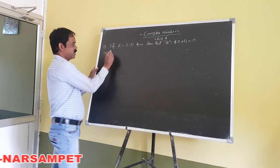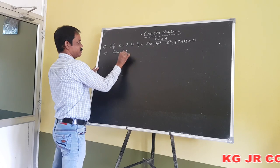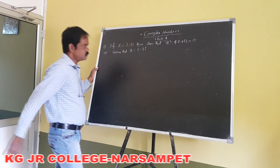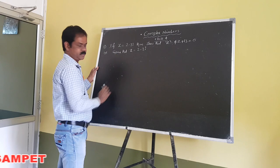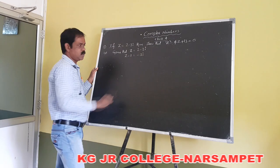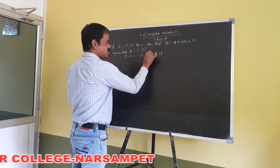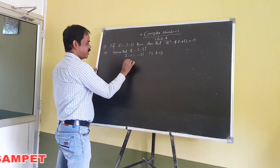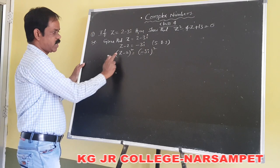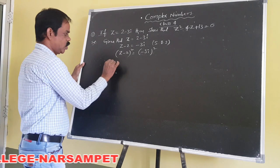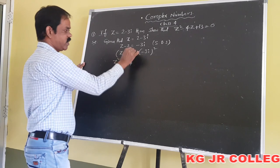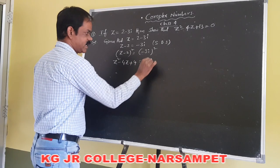First of all, the given complex number is z equals 2 minus 3i. We rearrange this so that z minus 2 equals minus 3i. Now squaring on both sides, we get z minus 2 whole square equals minus 3i whole square. Expanding using the a minus b whole square formula, we get z squared minus 4z plus 4 equals 9i squared.